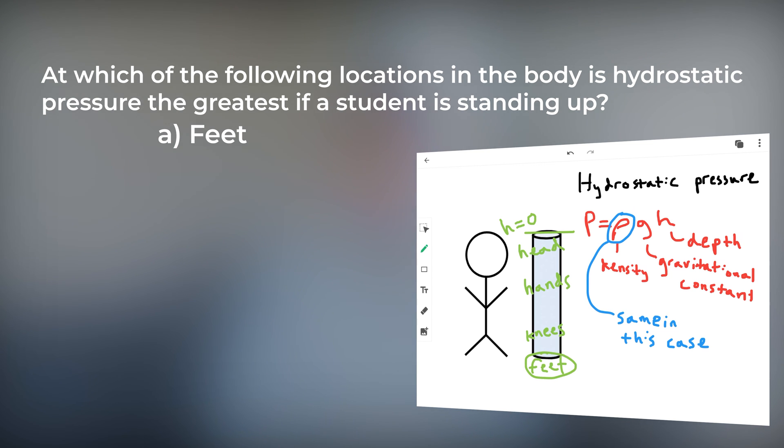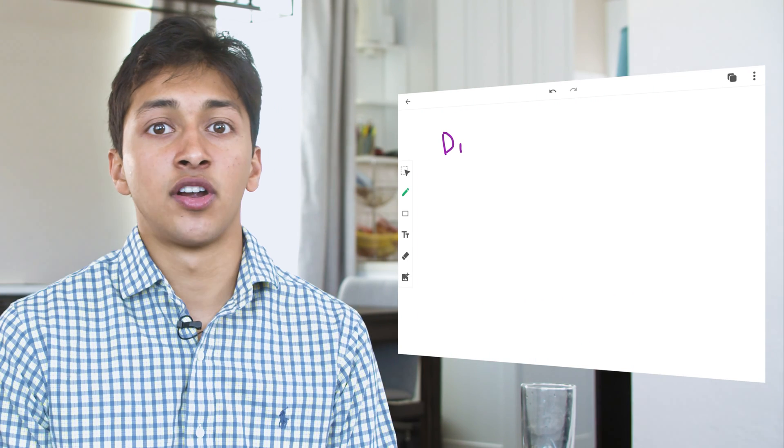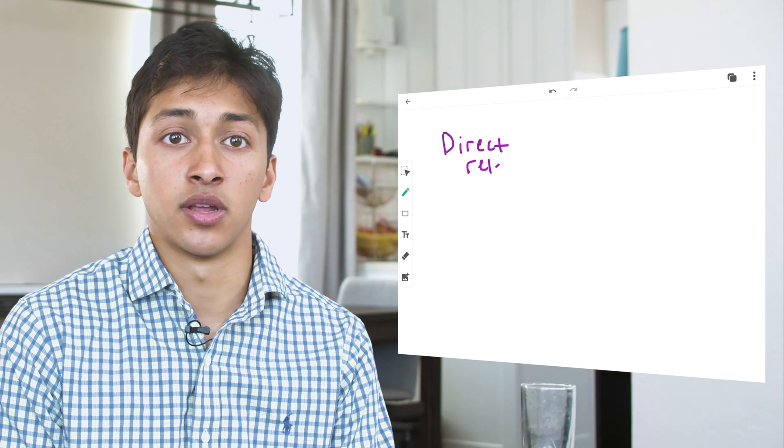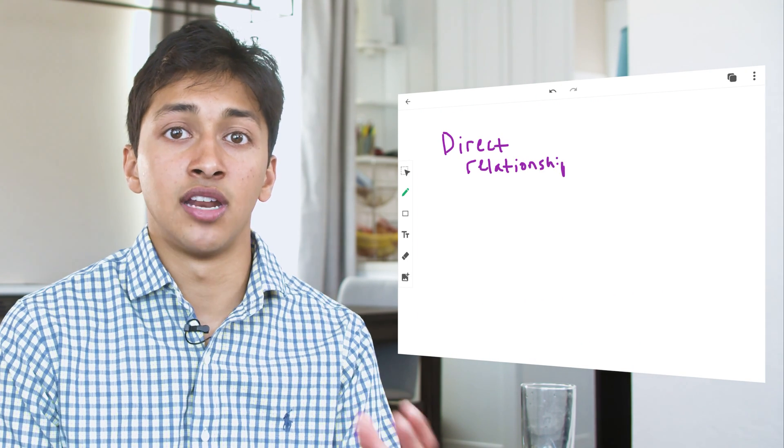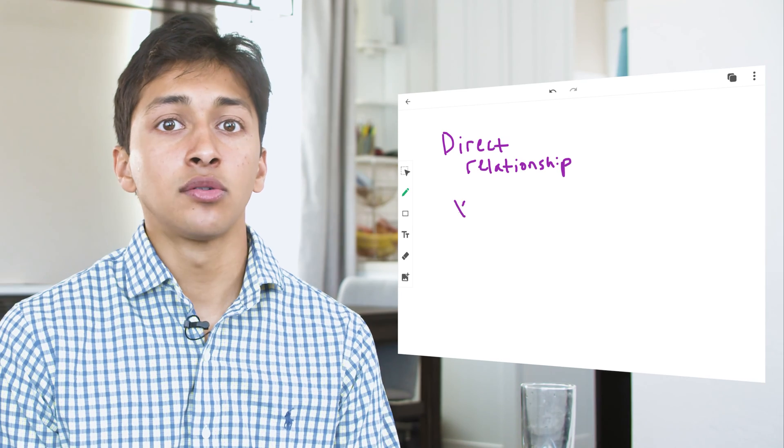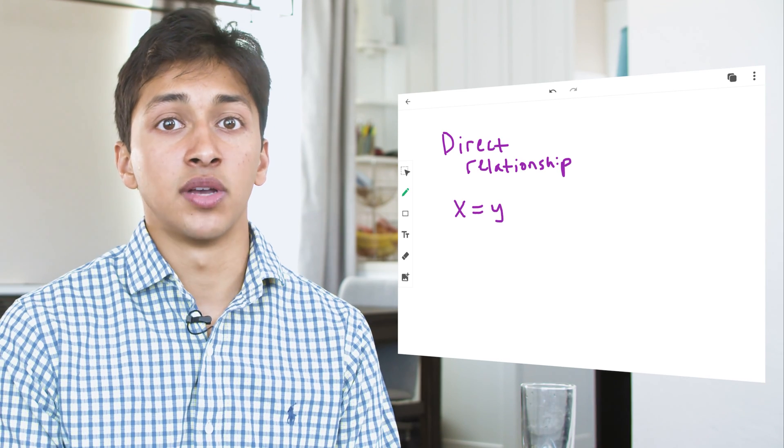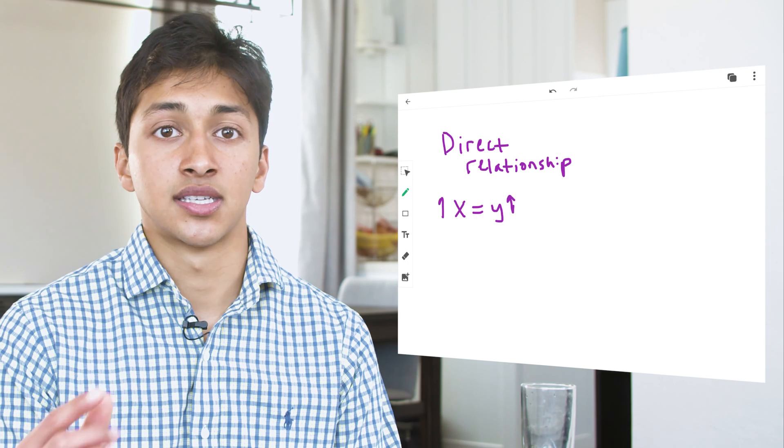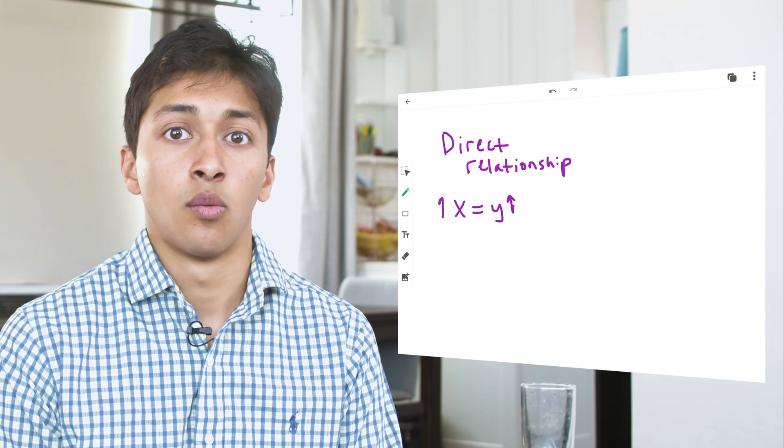Pressure and depth are directly proportional according to our formula. So when depth is the greatest, pressure will also be the greatest and you will choose feet as your answer. The two main variable relationships you should be familiar with are directly proportional and inversely proportional. A direct relationship means that one variable will increase with the other and it looks like this, x is equal to y.